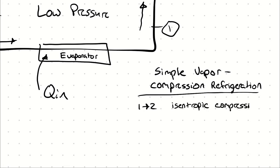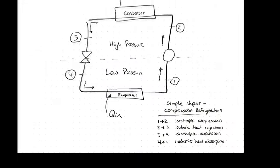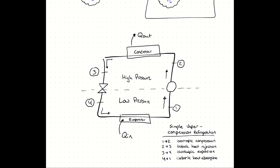So one to two, we consider as isentropic compression. In two to three, we have approximately isobaric heat rejection. In three to four, we have isenthalpic expansion. And in four to one, we have isobaric heat absorption. Those four processes allow us to take in work and push heat in a favorable direction that it would not naturally want to go.